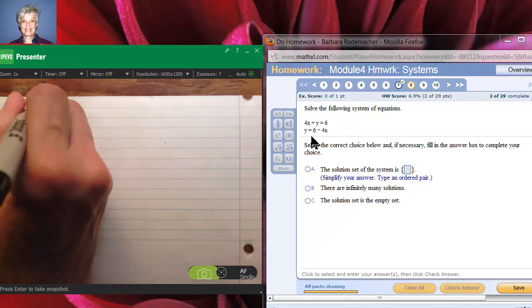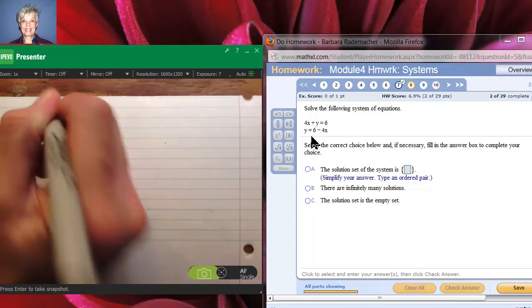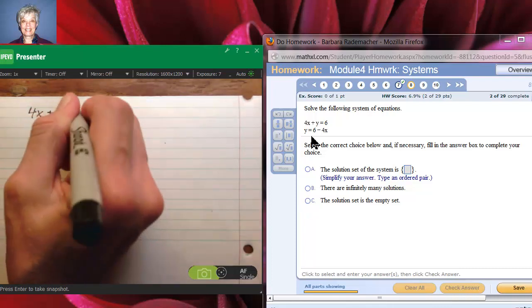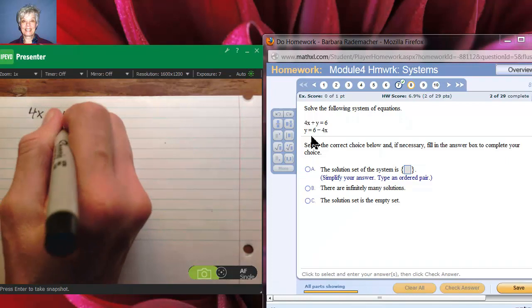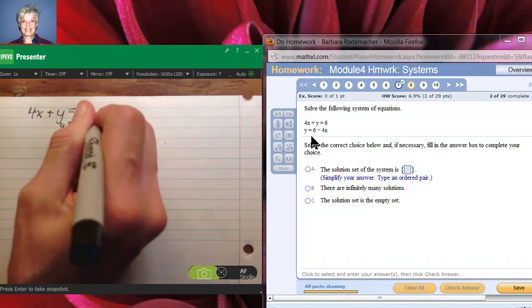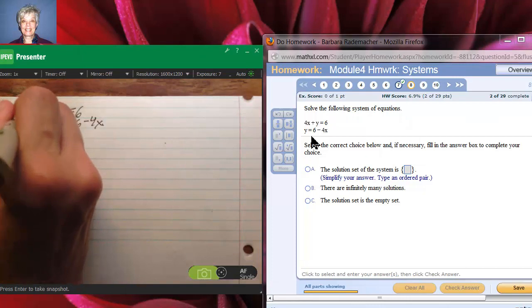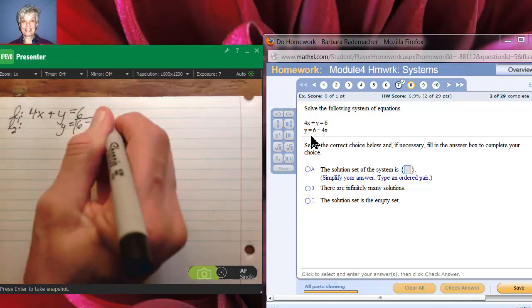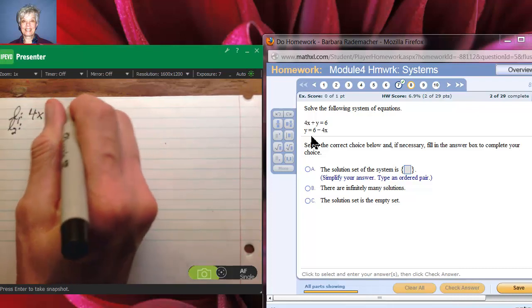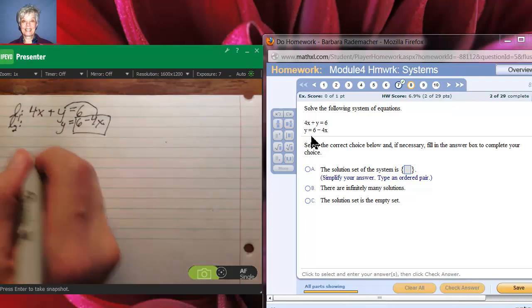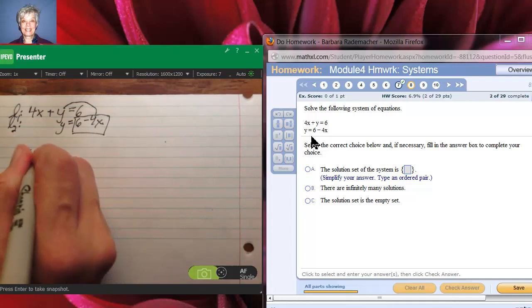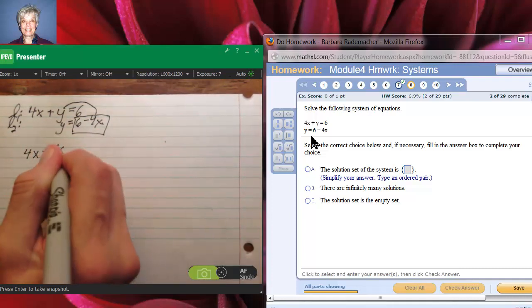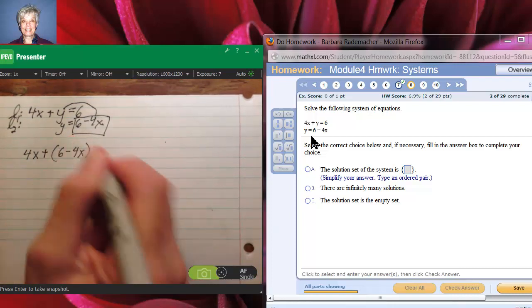So, if I have 4x plus y equals 6, and y equals 6 minus 4x, and this is line 1, and this is line 2, then you're going to take what y equals in line 2, and put it in for y up in line 1. And that will give you 4x plus 6 minus 4x equals 6.